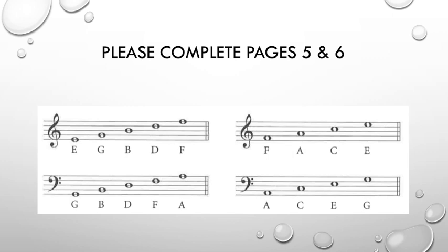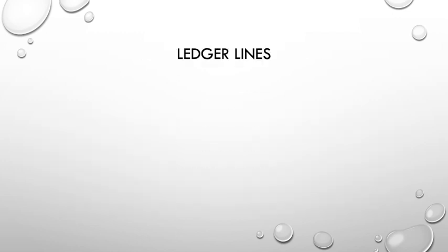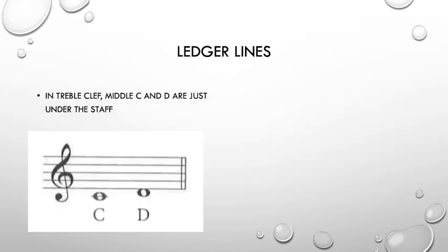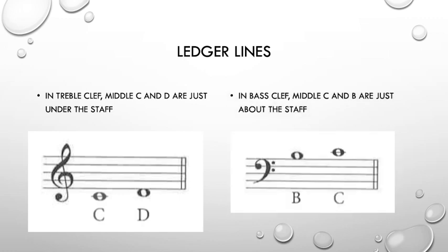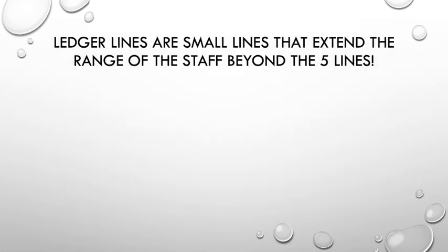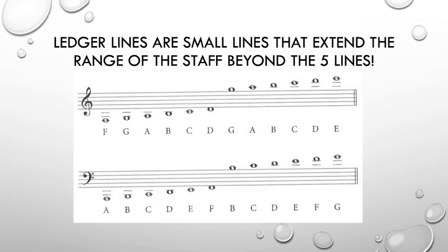Great. Continuing on. So, small lines called ledger lines are used to extend the range of the staff. These lines are used for notes that are above or below the five lines of the treble and bass staves. Here are some examples that include notes up to three ledger lines above and below the staff, but even more ledger lines may be added above and below if you wish to extend the range of the staff.